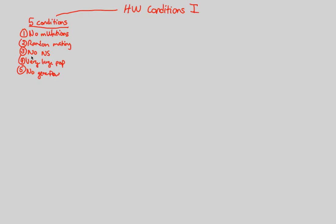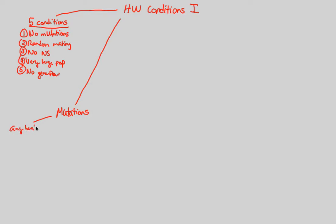You have to memorize and understand these conditions, but more importantly you'll better understand them by looking at what's actually seen in reality. Starting with the very first one: in reality we don't have no mutations — we have mutations. Mutations can be defined very simply as any hereditable change in DNA. The key idea is that the change has to be hereditable — it has to be passed on.